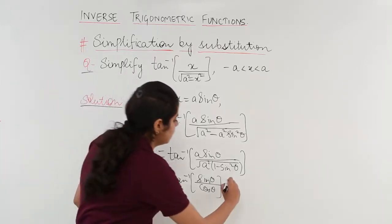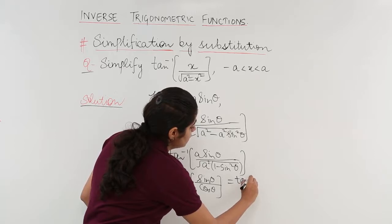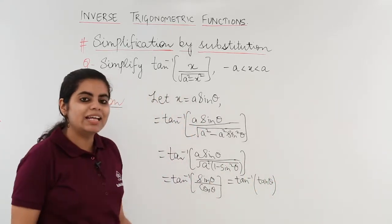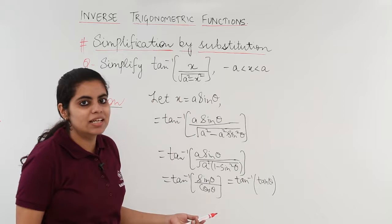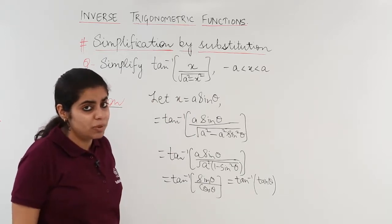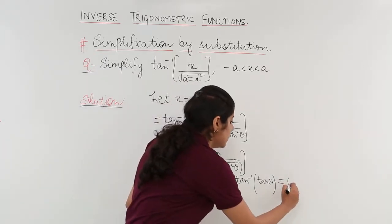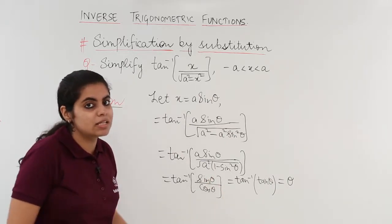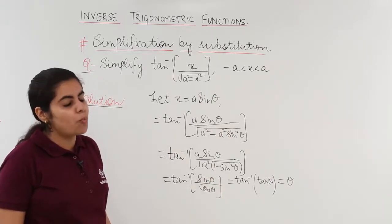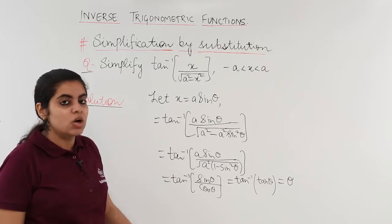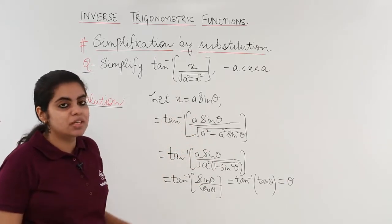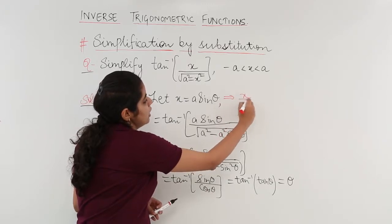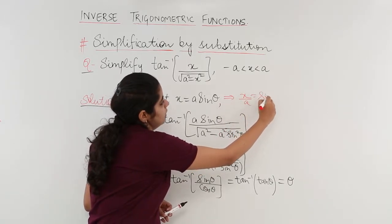So we get tan inverse of tan theta. Tan inverse and tan get nullified, leaving theta as the answer. However, we cannot keep the answer as theta — we need to back-substitute. What is theta from the first step?